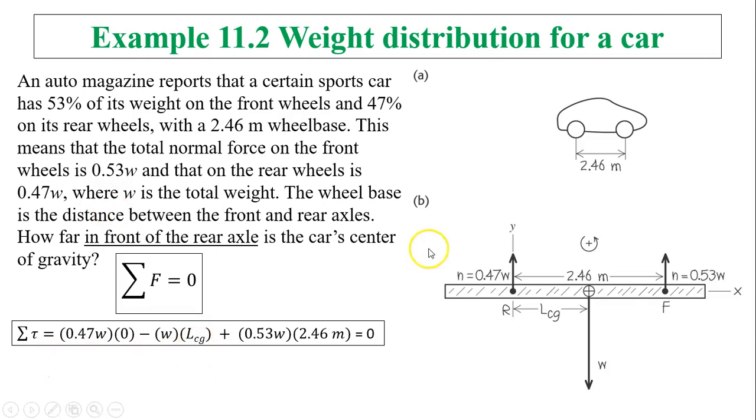There are three forces. The first force produces 0 torque because that is my origin. The second force, W, produces a clockwise torque, so it's negative W times LCG. The third one, N equals 0.53W going upward, produces counterclockwise torque, so that's positive. I set this equals to 0, then I solve: LCG equals 1.3 meters.